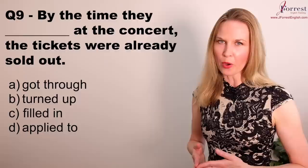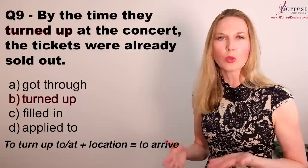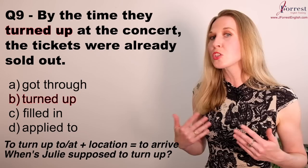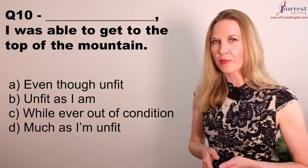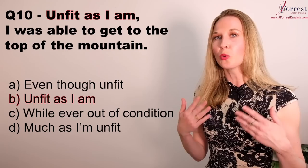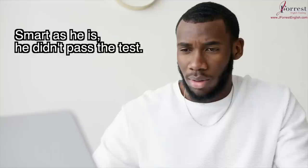Number nine: By the time they turned up at the concert, the tickets were already sold out. When a person 'turns up' at a location, it means they arrive there. Number ten: Unfit as I am, I was able to get to the top of the mountain. This is a useful way to describe yourself or a situation: beautiful as it was, I didn't take a picture; smart as he is, he didn't pass the test.